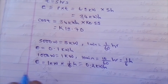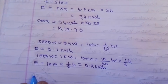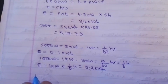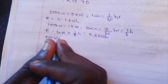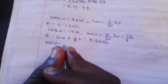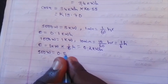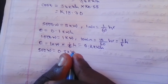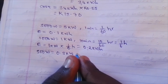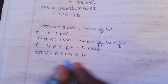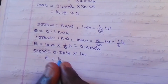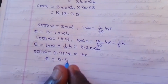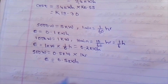Option C: 500 watts electric iron for 1 hour. 500 watts is equal to 0.5 kilowatts. Times 1 hour, the energy will be equal to 0.5 kilowatt hours.